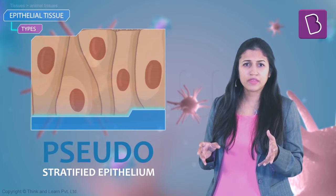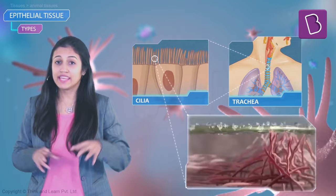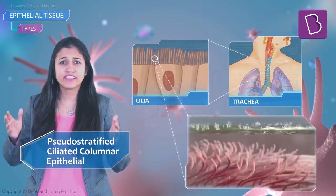The word 'pseudo' means misleading or deceptive, and that's exactly their name: pseudo-stratified epithelium. They are found in the lungs and have cilia, giving them the full name pseudo-stratified ciliated columnar epithelial cells.